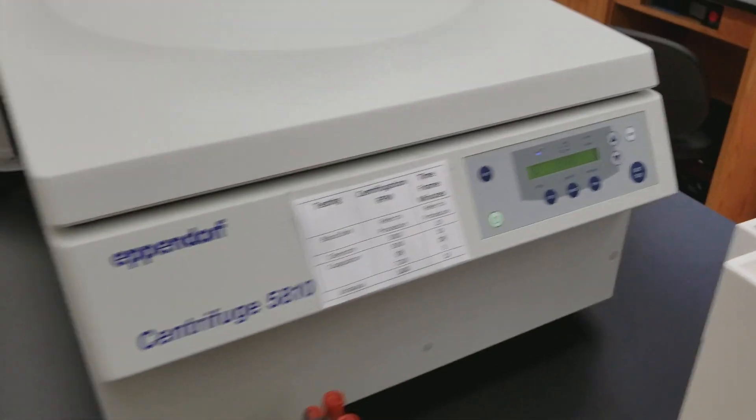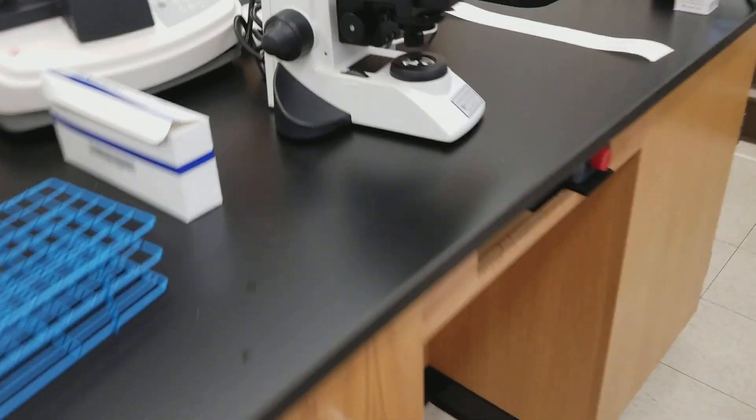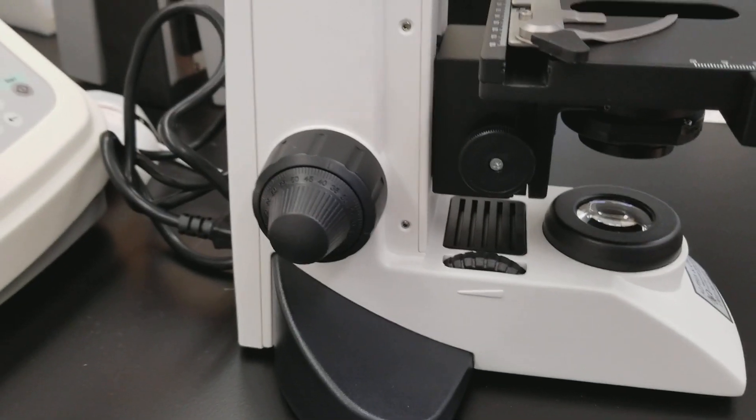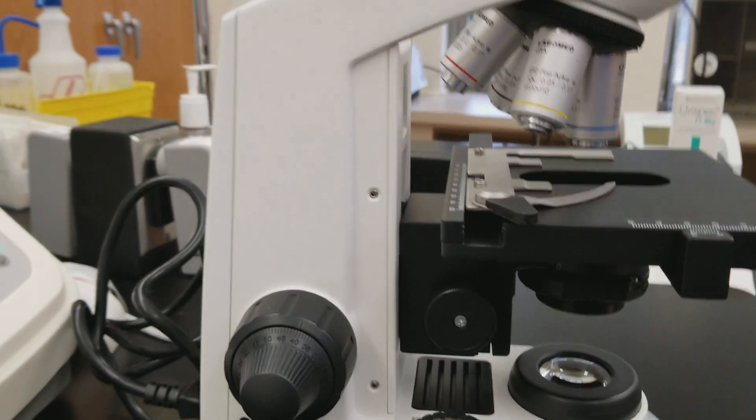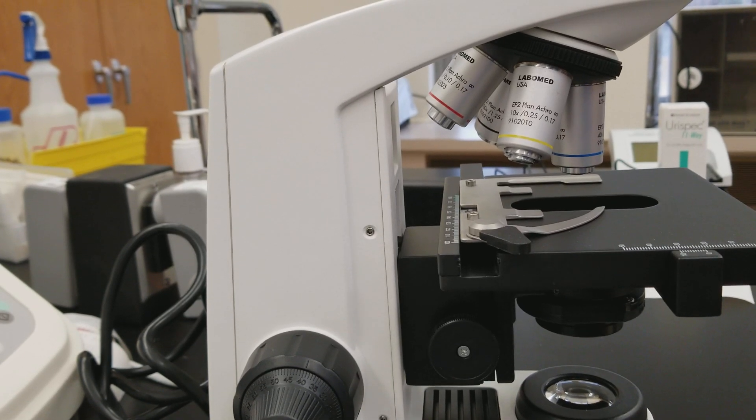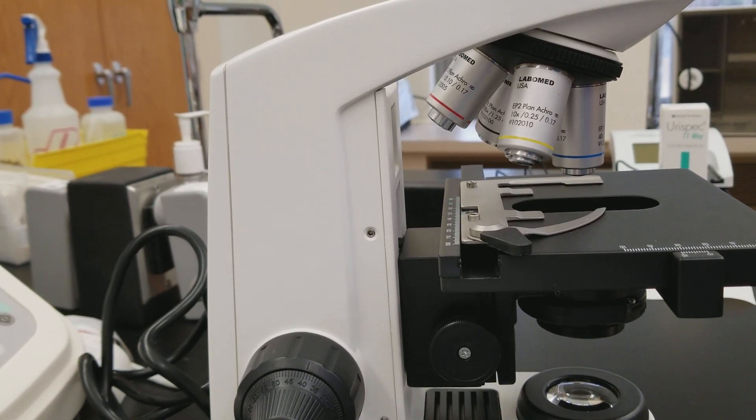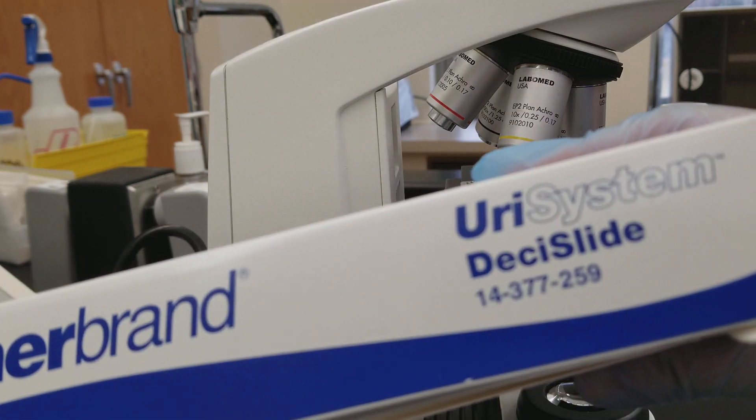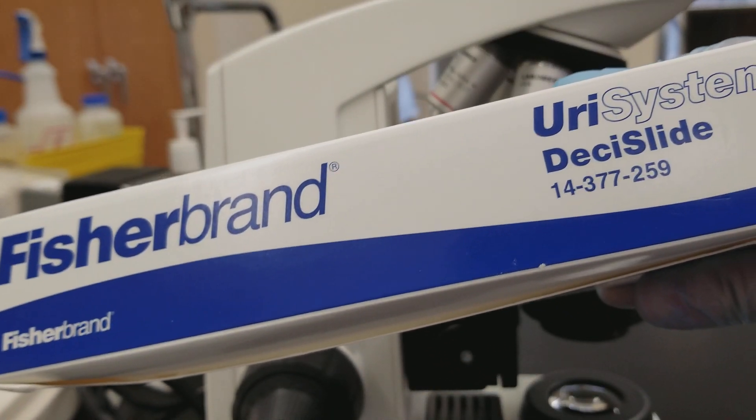While we're waiting for that to finish up, I want to set up my microscope with you. So what we're going to do is we're going to set this microscope up and make sure that it's ready to go. What we're going to use, we use a specific kind of slide for urinalysis when you do the microscopic. It's the urus system, DECA slide.